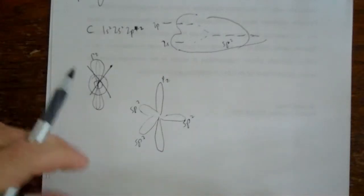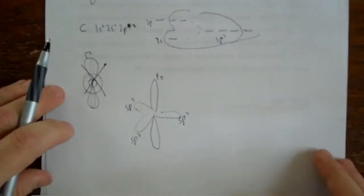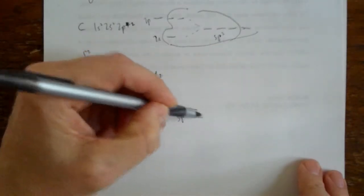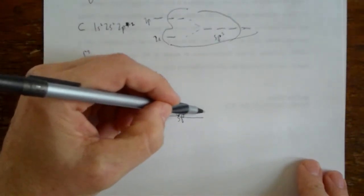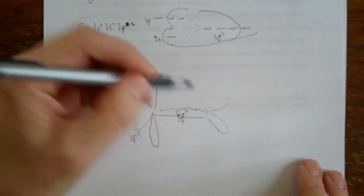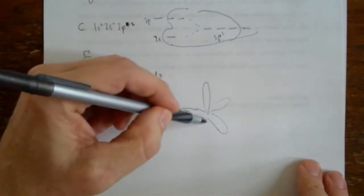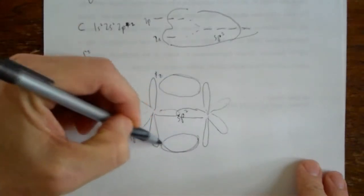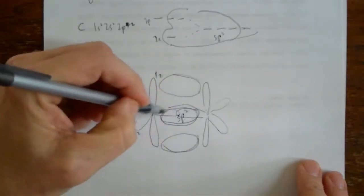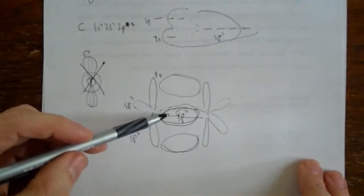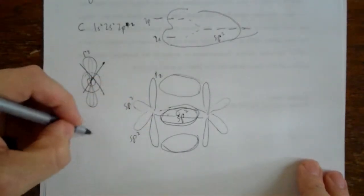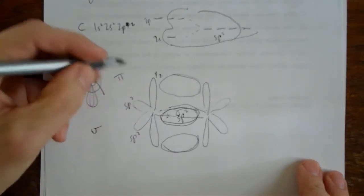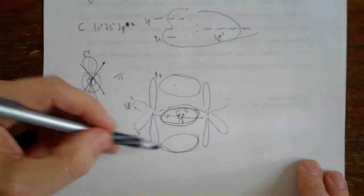So this is an sp2 hybridized orbital. This is an sp2 hybridized orbital. This is an sp2 hybridized orbital. And here is an unhybridized p orbital. And so if we have, if we ever want to make double bonds, you recall from GenChem that a double bond is going to come from an overlap of a sigma bond, so let's just do two carbons next to each other that are both sp2 hybridized. It's going to go side-to-side overlap, right?